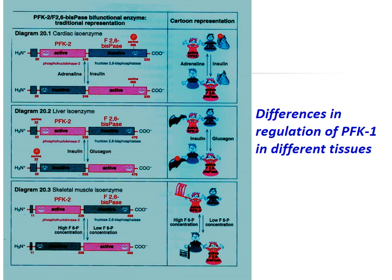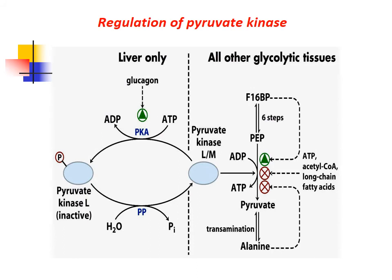The figure shows differences in regulation of PFK1 in different tissues — the cardiac isoenzyme regulated by adrenaline and insulin, the liver isoenzyme, and the skeletal muscle isoenzyme. Regulation of pyruvate kinase: In all glycolytic tissues, regulation is by allosteric mechanisms. Fructose-1,6-bisphosphate allosterically activates pyruvate kinase. ATP, acetyl-CoA, and long-chain fatty acids allosterically inhibit pyruvate kinase.